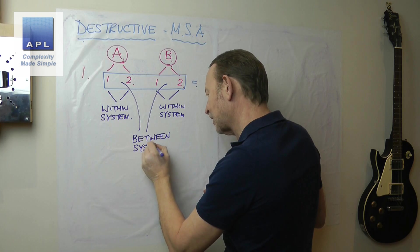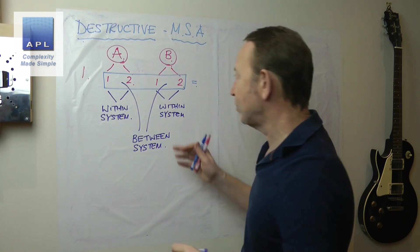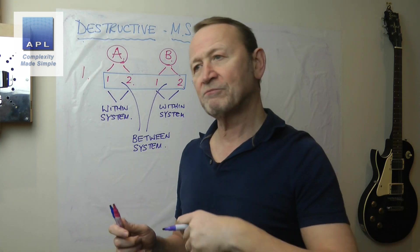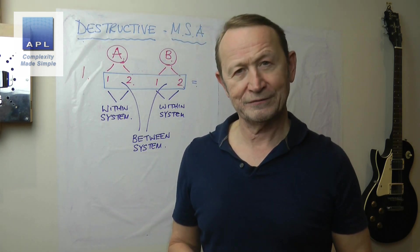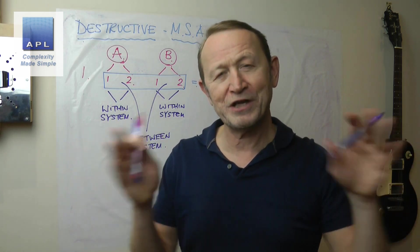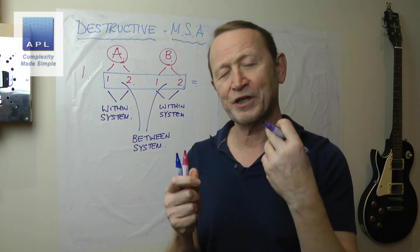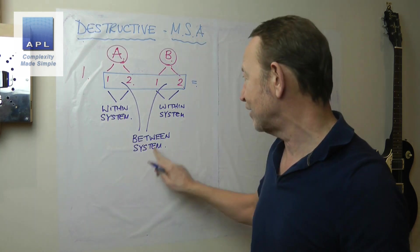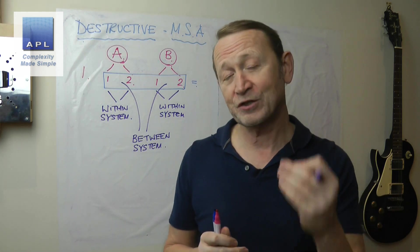Now this is what I want to clarify. People sometimes send me messages and they say, is that machine or operator error? No, it's system error. You cannot discriminate between where the error is coming from. You can only discriminate within and between a measurement system.